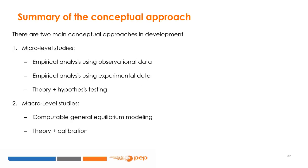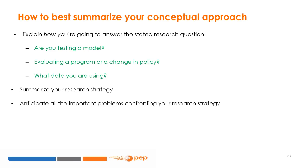This is where you explain concisely how you answer your research question. In the field of development, there are two main groups of studies: micro-level and macro-level. Whatever the type of study you conducted, it is important to state your approach clearly — it can be a micro-level empirical study using observational data, cross-section or longitudinal, or a macro-level CGE analysis of a given fiscal or environmental policy. To best summarize your conceptual approach, you want to explain how you're going to answer the stated research question: are you testing a model? Evaluating a program or policy change? What data are you using? In an empirical paper, state your identification strategy, defend your identification assumptions, anticipate important problems, and show how you solve them.